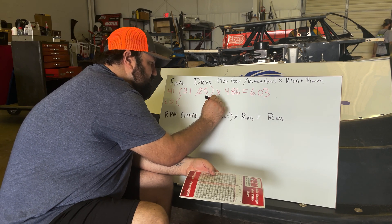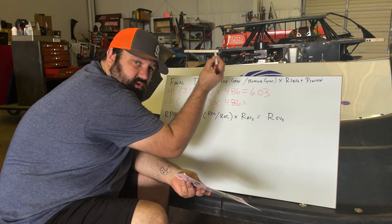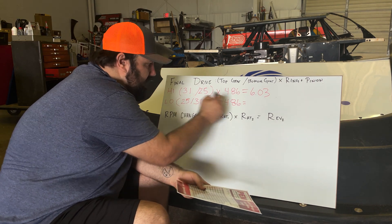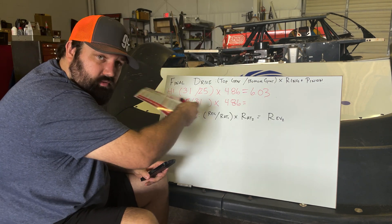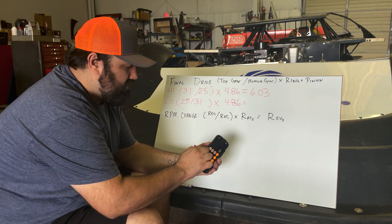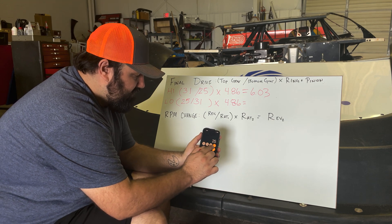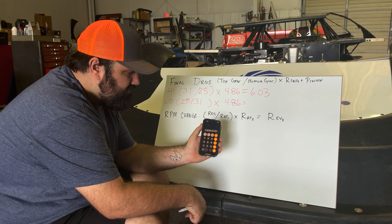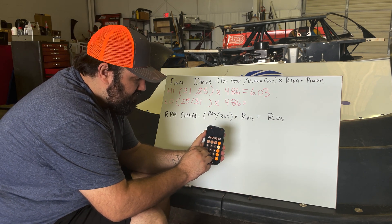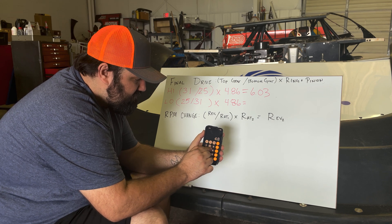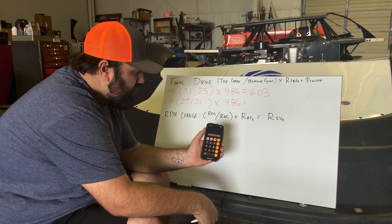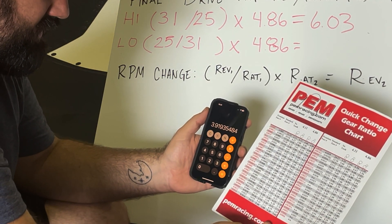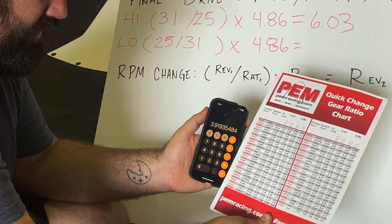Now we'll do the same thing for the low ratio. Generally I don't run the gears as a low ratio. In this case, the little gear is on top: 25 divided by 31, times 4.86. If you have a gear chart you don't have to do the math — it's done for you. 25 divided by 31 gives us 0.80645, times 4.86 gives us 3.919. Checking against the gear chart, they have 3.92 — correct.